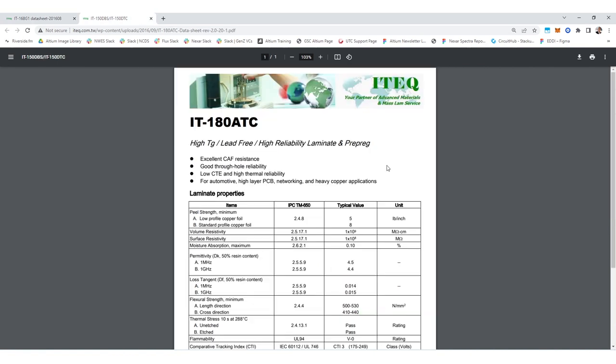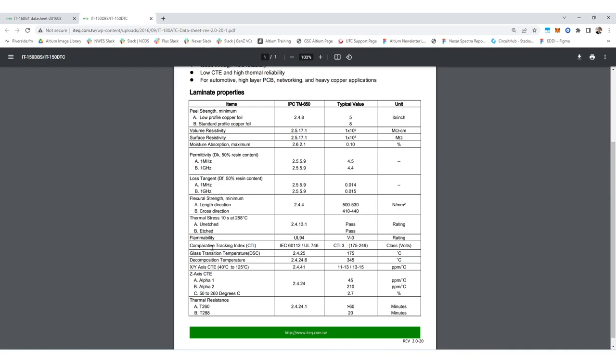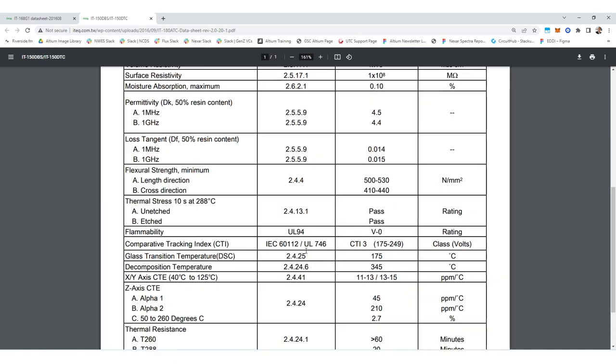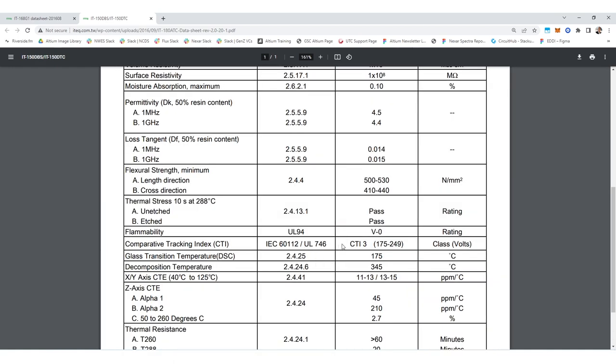Now take a look at this data sheet. Here in this data sheet, they're marketing this as a high reliability laminate and prepreg. And one thing that they note here is excellent CAF resistance. And so I'll get into what CAF is here in just a moment. But the other thing that they've done here in this particular data sheet is they actually show you the comparative tracking index as defined in these two IEC and underwriters laboratory standards. And so you can see right here, it has a CTI level of three. So that classifies this as appropriate for use between 175 and 249 volts DC.